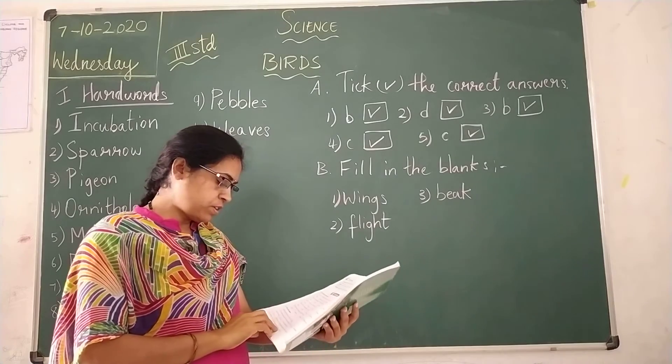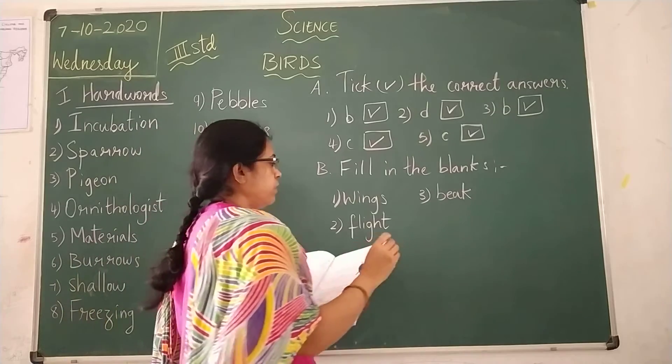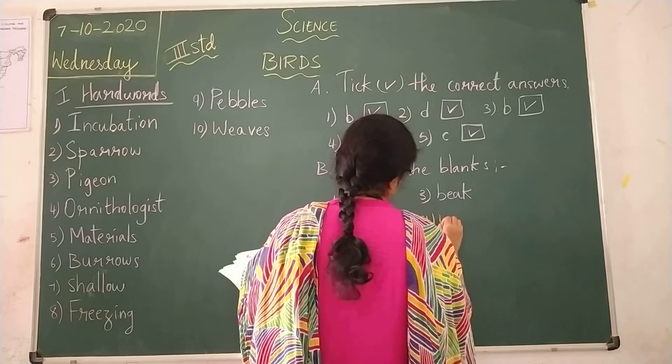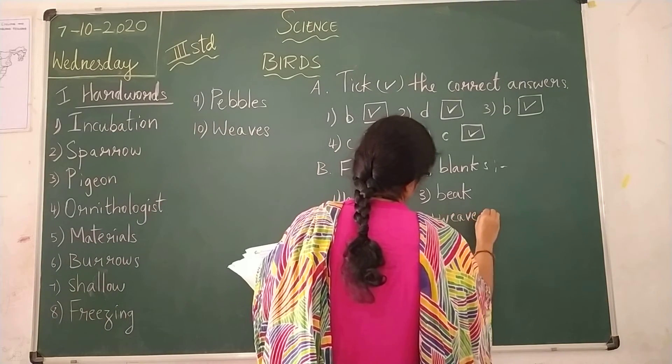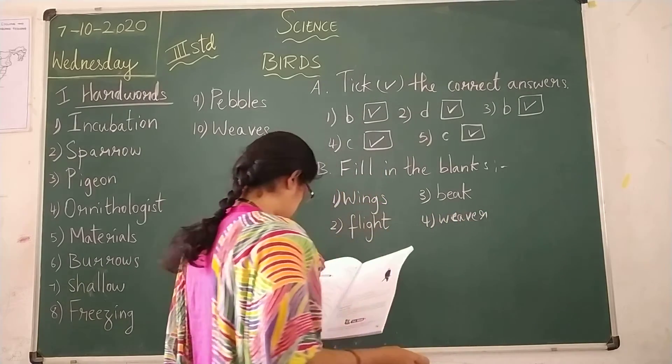Fourth. A weaver bird uses pieces of leaves, grass and twigs to build its nest. That is, weaver bird. Weaver bird uses all these things to build its nest.